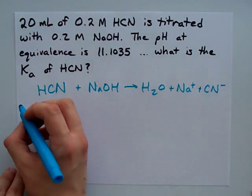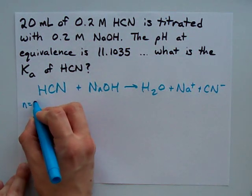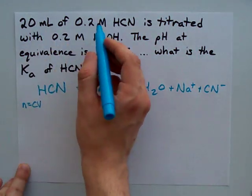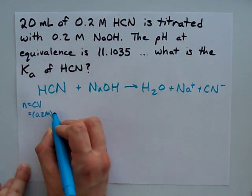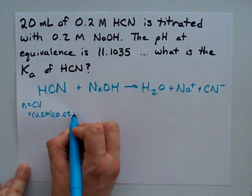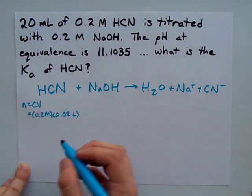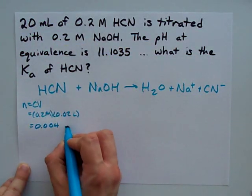How many moles of HCN do I have to start with? Well, I have the concentration and volume of the HCN that I started with. It's 0.2 moles per liter and 0.02 liters. See how I divide by 1000 to get 0.004 moles.